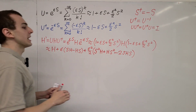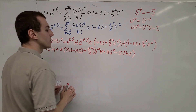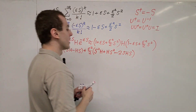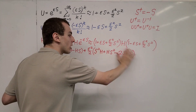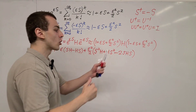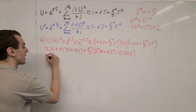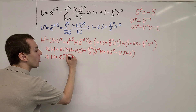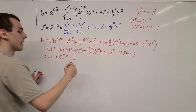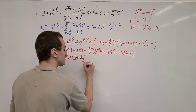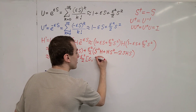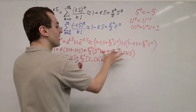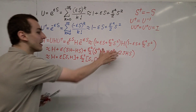Now I want to write these terms in terms of commutators. This first order contribution is by definition the commutator of S with H. What about the second order mess? It can actually be written as nested commutators. So the full result is: H prime equals H plus epsilon times the commutator of S with H, plus epsilon squared on two times the commutator of S with the commutator of S with H. There is a commutator within a commutator — I'll explicitly show why that is the case.